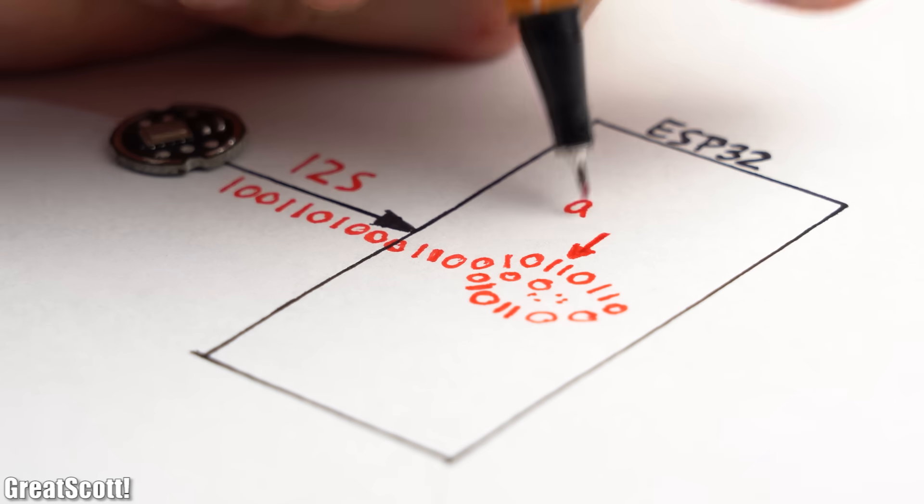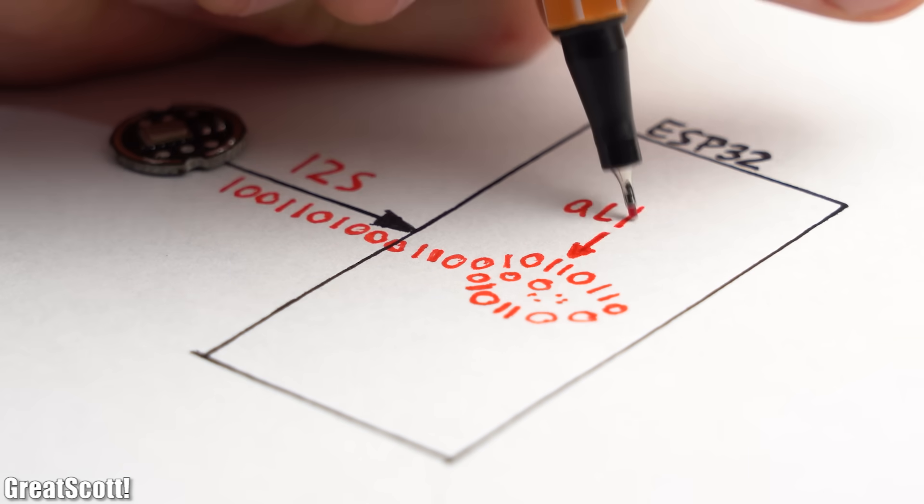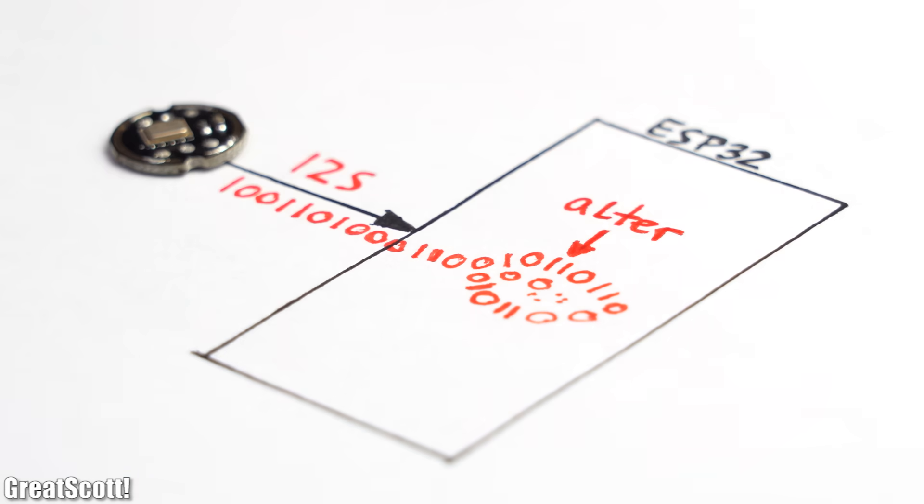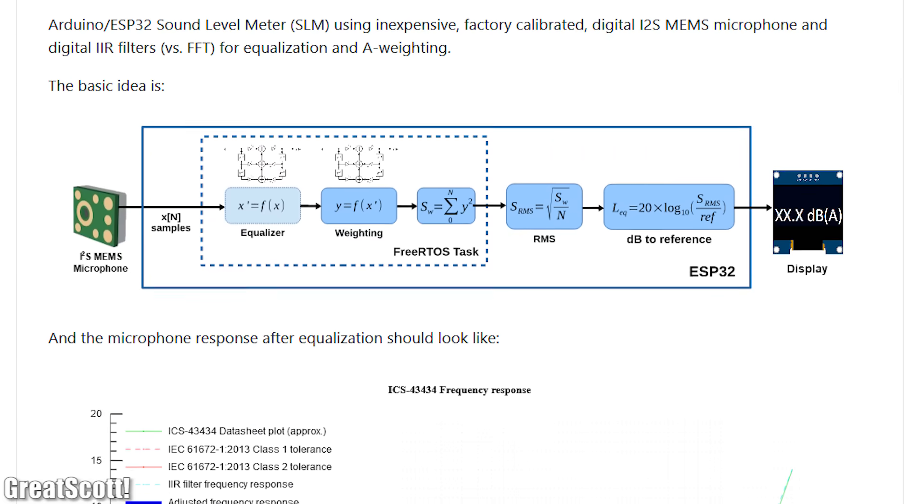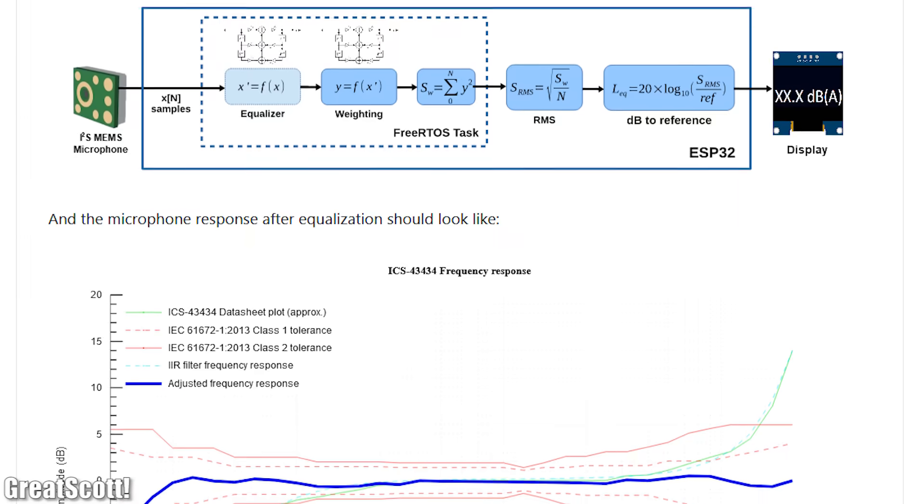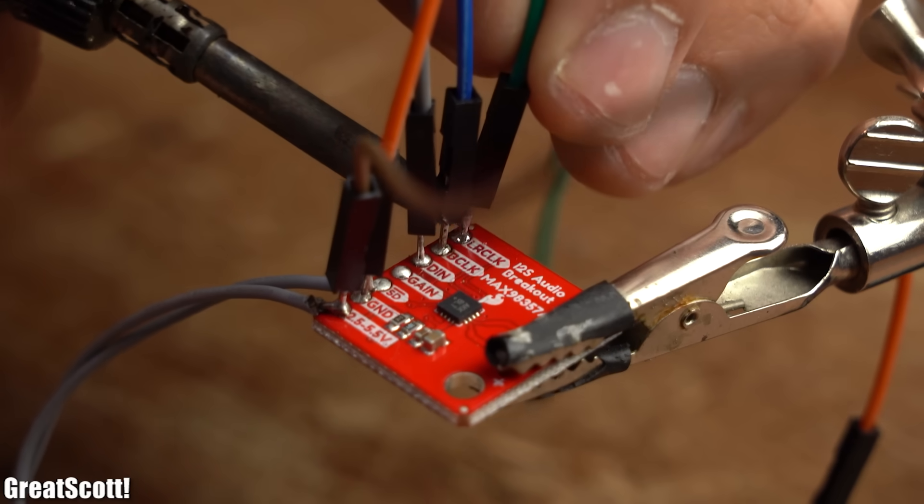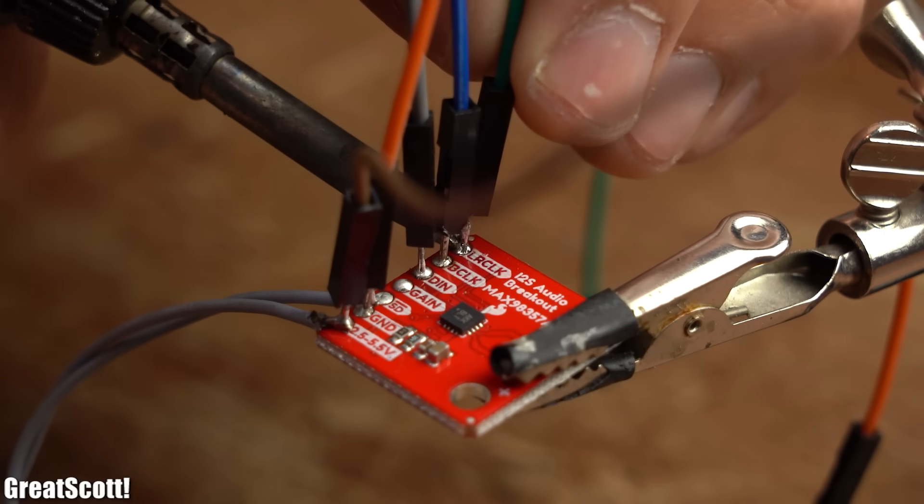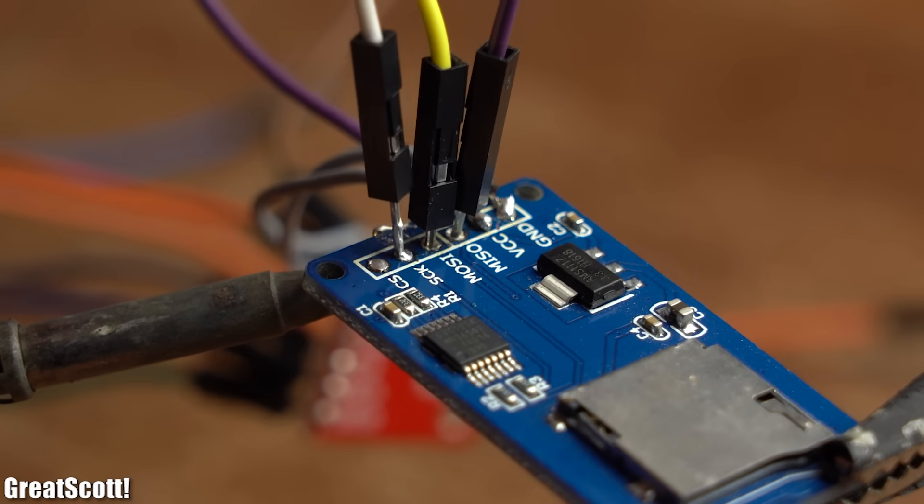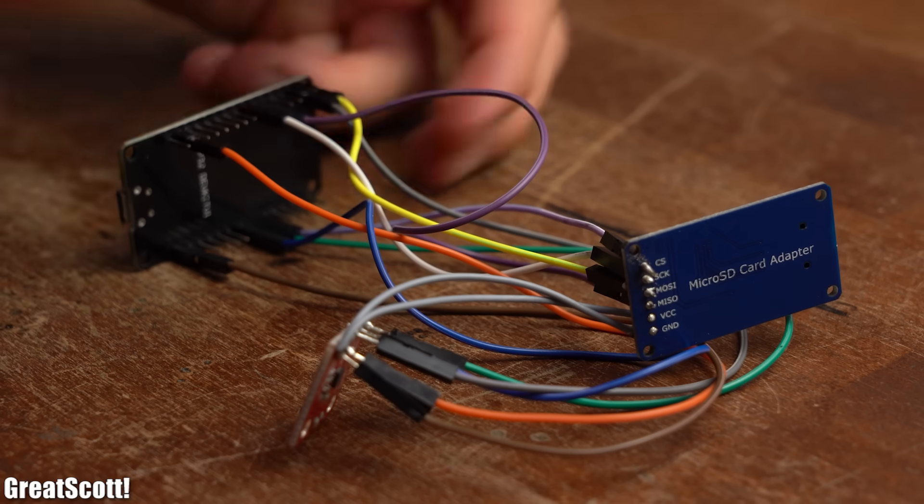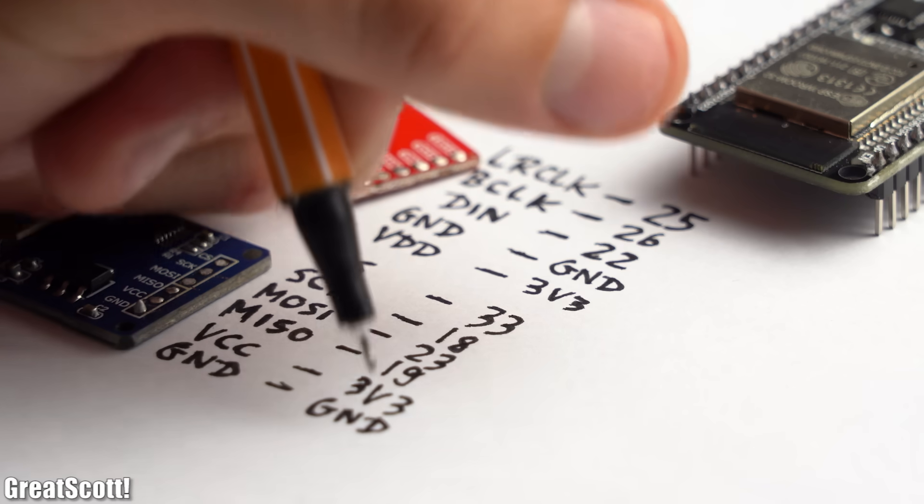Now of course at this point we could alter the received microphone data to for example create a voice changer or even a pretty scientific sound level meter. But that was not the goal of this video. Instead I soldered out wires to my I2S amplifier board as well as the microSD card board and hooked it all up to the ESP32 according to this wiring diagram.